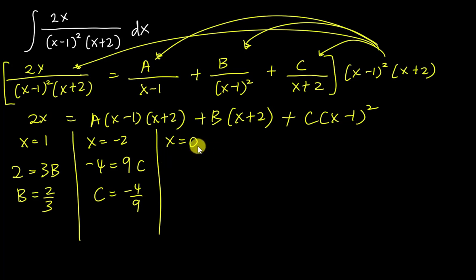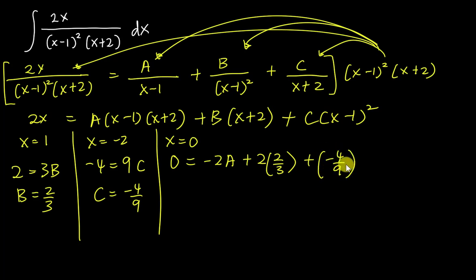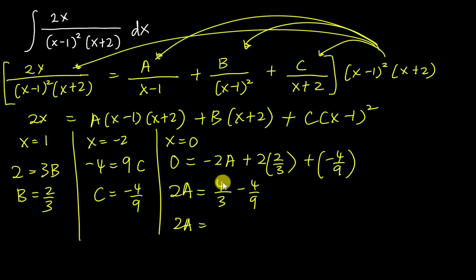I can insert any value for x to find A; I'll use x = 0. The left side gives 0. The A term gives -2A (since 0-1 = -1 and 0+2 = 2, so A(-1)(2) = -2A). The B term gives (0+2)(2/3) = 4/3. The C term gives (-1)²(-4/9) = -4/9. So 0 = -2A + 4/3 - 4/9. Solving: 2A = 4/3 - 4/9 = 12/9 - 4/9 = 8/9, so A = 4/9.